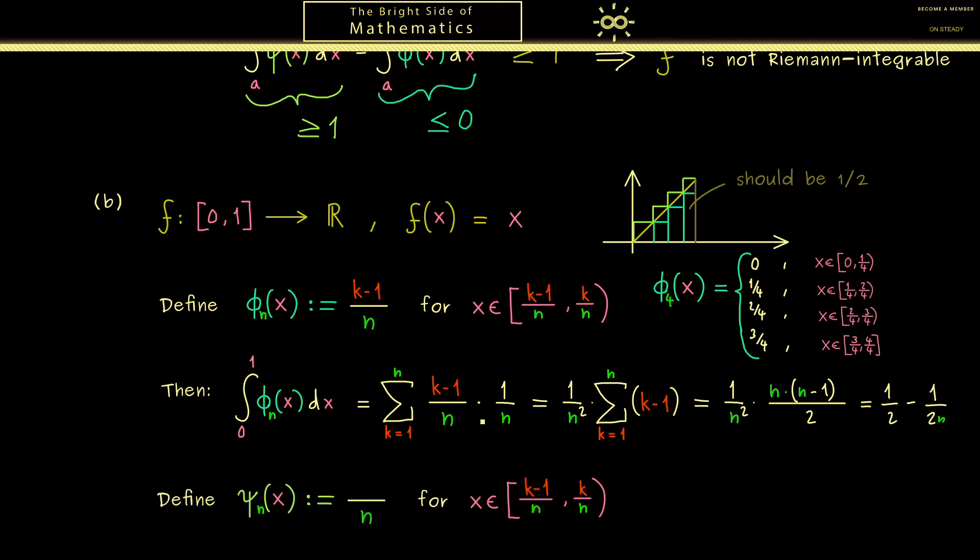Therefore the definition of ψ_n should look more or less the same as the definition of φ_n. Of course the partition of the x-axis should be the same. We only have to shift the values. Indeed instead of k-1 we now can choose k. So you see it's not hard at all to define such a step function.